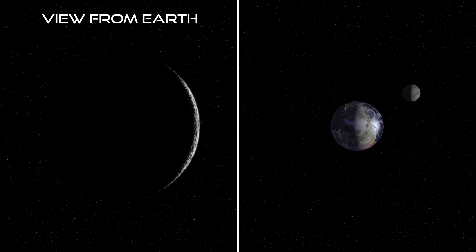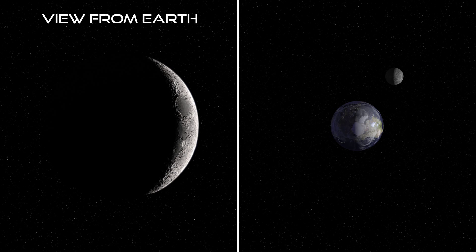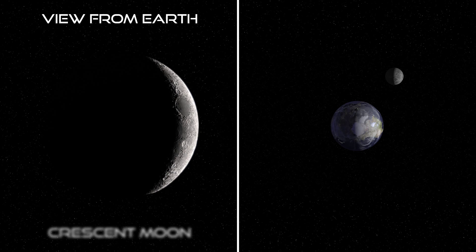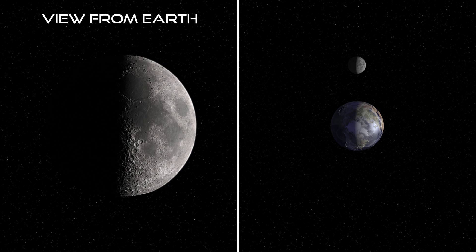As the Moon moves around the Earth in our model, it starts out looking like a thin sliver to us on Earth. This is called a Crescent Moon, and since it is growing larger, it is a waxing crescent. As the Moon continues to wax or grow larger, it reaches a point where one half of it is lit. This is called first quarter because the Moon is now at the first quarter of the distance around the Earth in its current orbit.